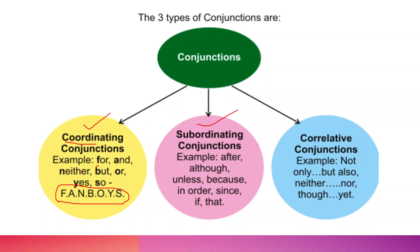Next is subordinating conjunction. Examples are: after, although, unless, because, in order, since, if, that. Here you will find that one sentence is independent and the other one is dependent — one is done because of the other. For example: 'Although I went, something was not happening' or 'I did this because of a reason.' There will be an independent clause and a dependent one.